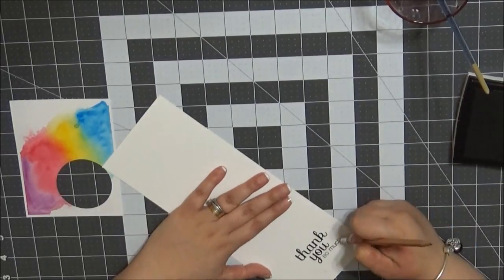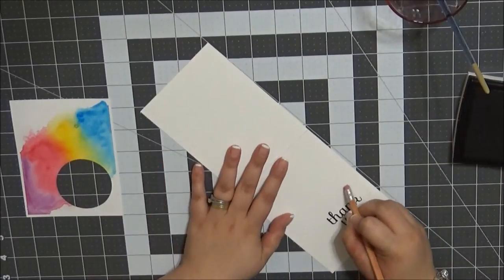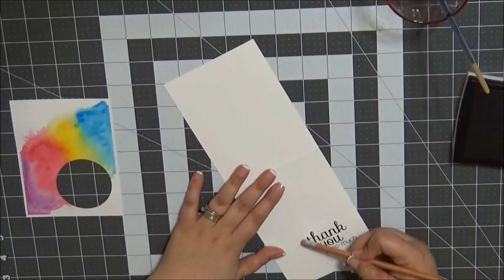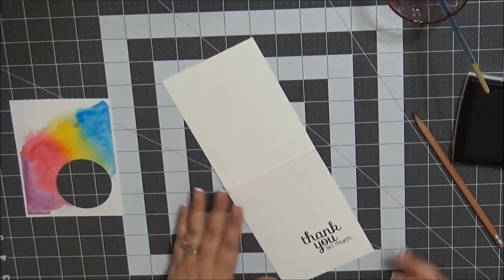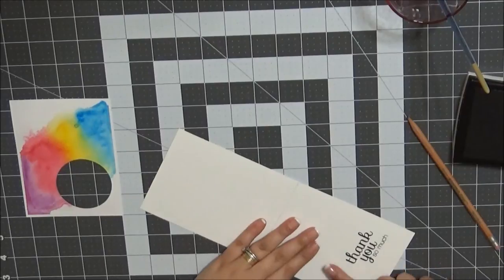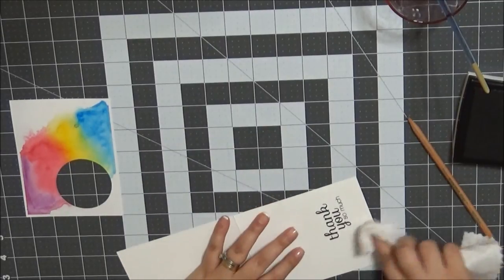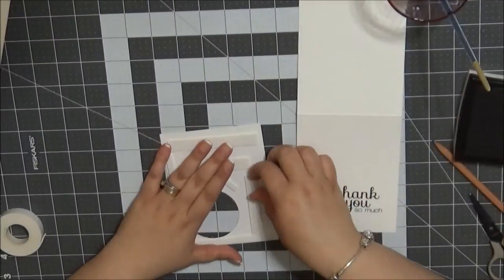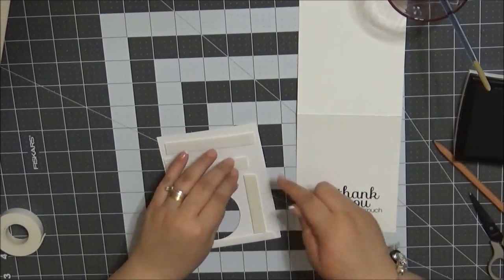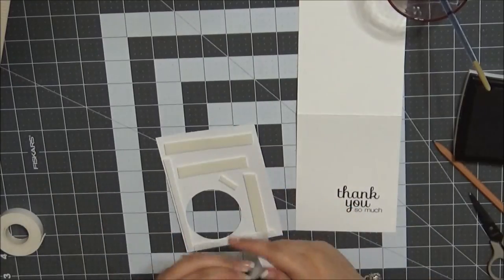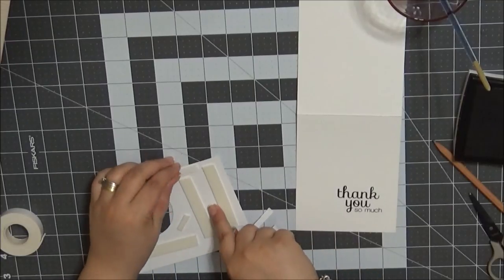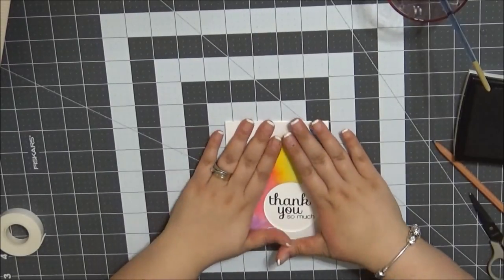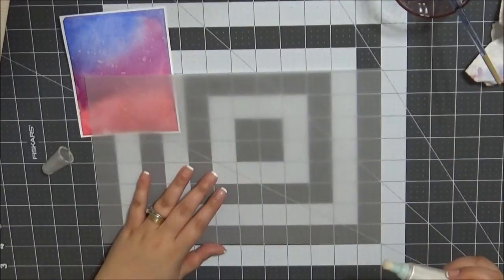And I'll be erasing the pencil mark around the sentiment so that you don't see it once I adhere the watercolor paper to the card base. Now I've put some Elmer's Craft Foam Tape on the back of my watercolor paper to make sure that it doesn't warp and just taking my front panel and adhering it to my card base and we're done.